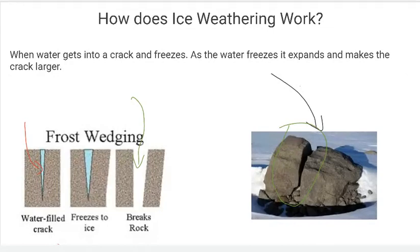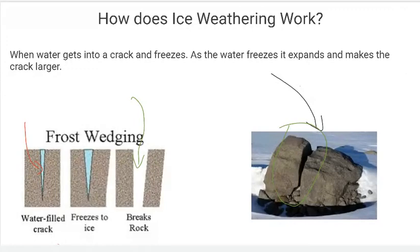So this is the first type of way that ice weathers the surface of the earth, especially rocks over time — through this idea of frost wedging. Multiple instances of water seeping into small cracks, and if it's cold enough outside, turning into ice and expanding. And then once it gets warmer outside, that ice turns back into a liquid, but the crack will still be there, and the water will drain out.